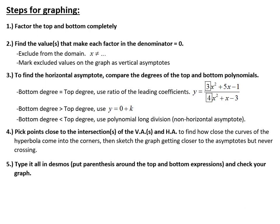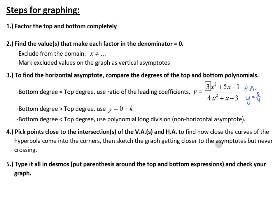Step three is to find the horizontal asymptote, which is a little more complex. We have to compare the degree of the top and bottom polynomials — the degree is the highest exponent on x. If the degree of the top and bottom are the same, for example both degree two, we use the ratio of the leading coefficients — the numbers in front of our biggest power of x. So if it's 3 over 4, the horizontal asymptote would be at y equals three fourths.